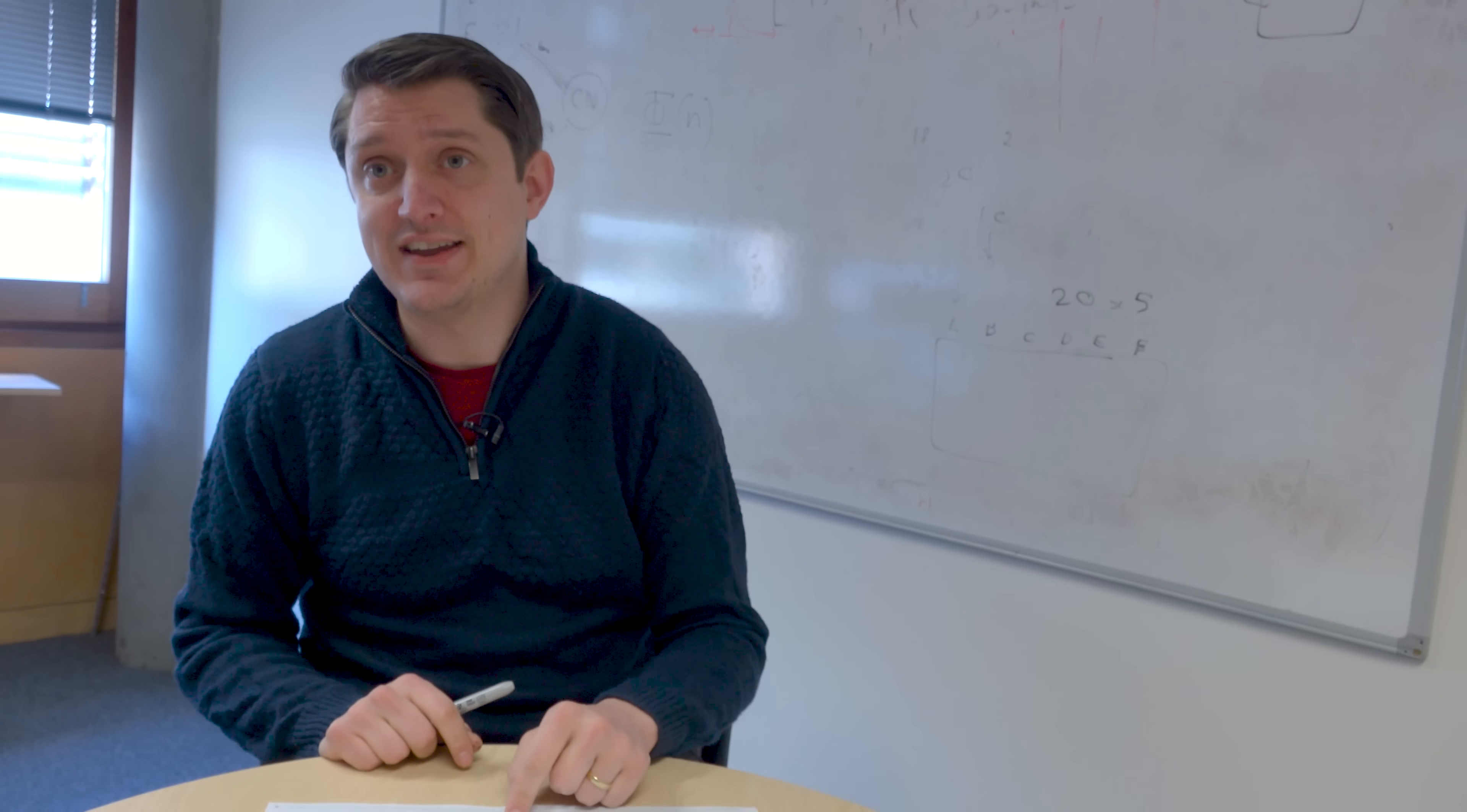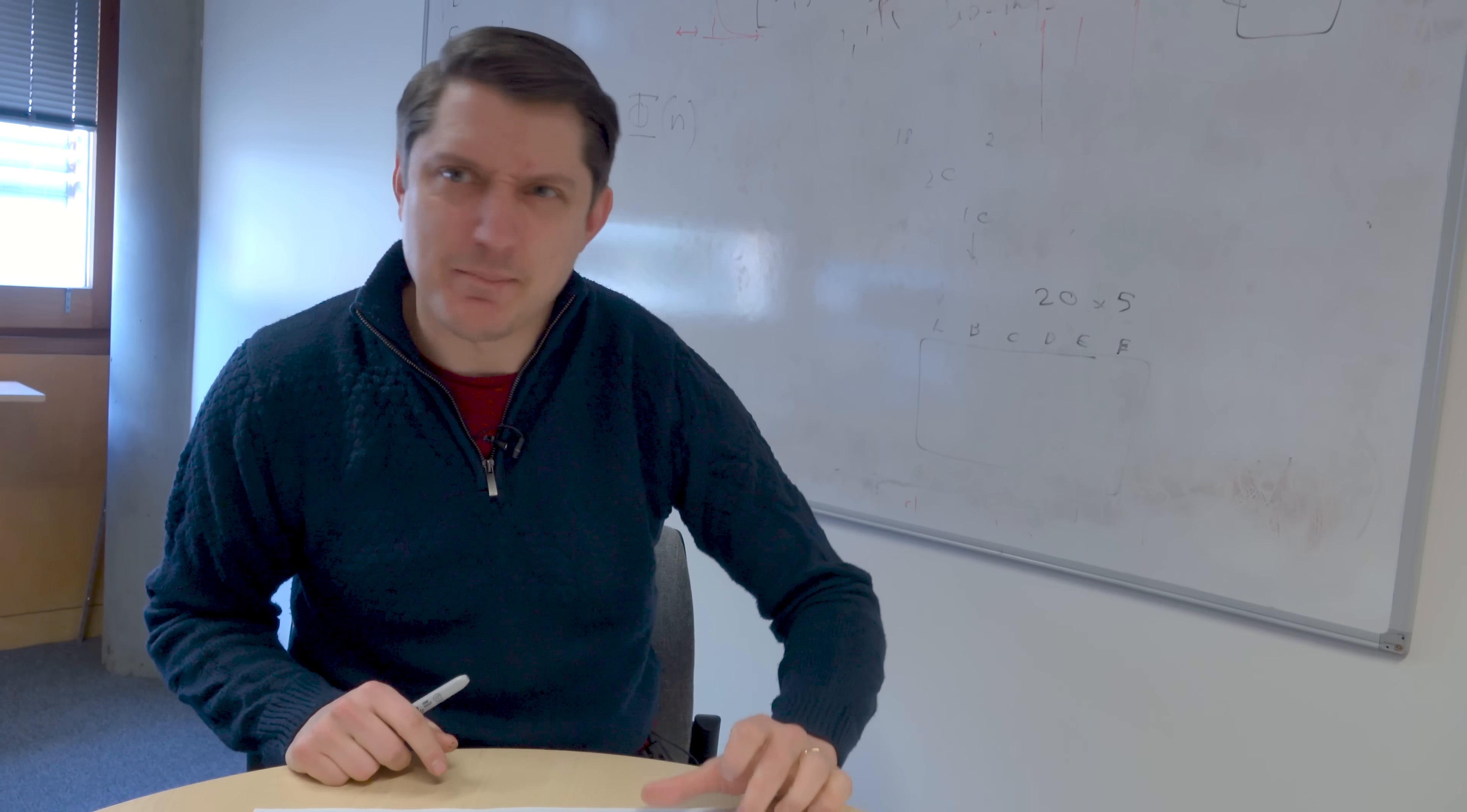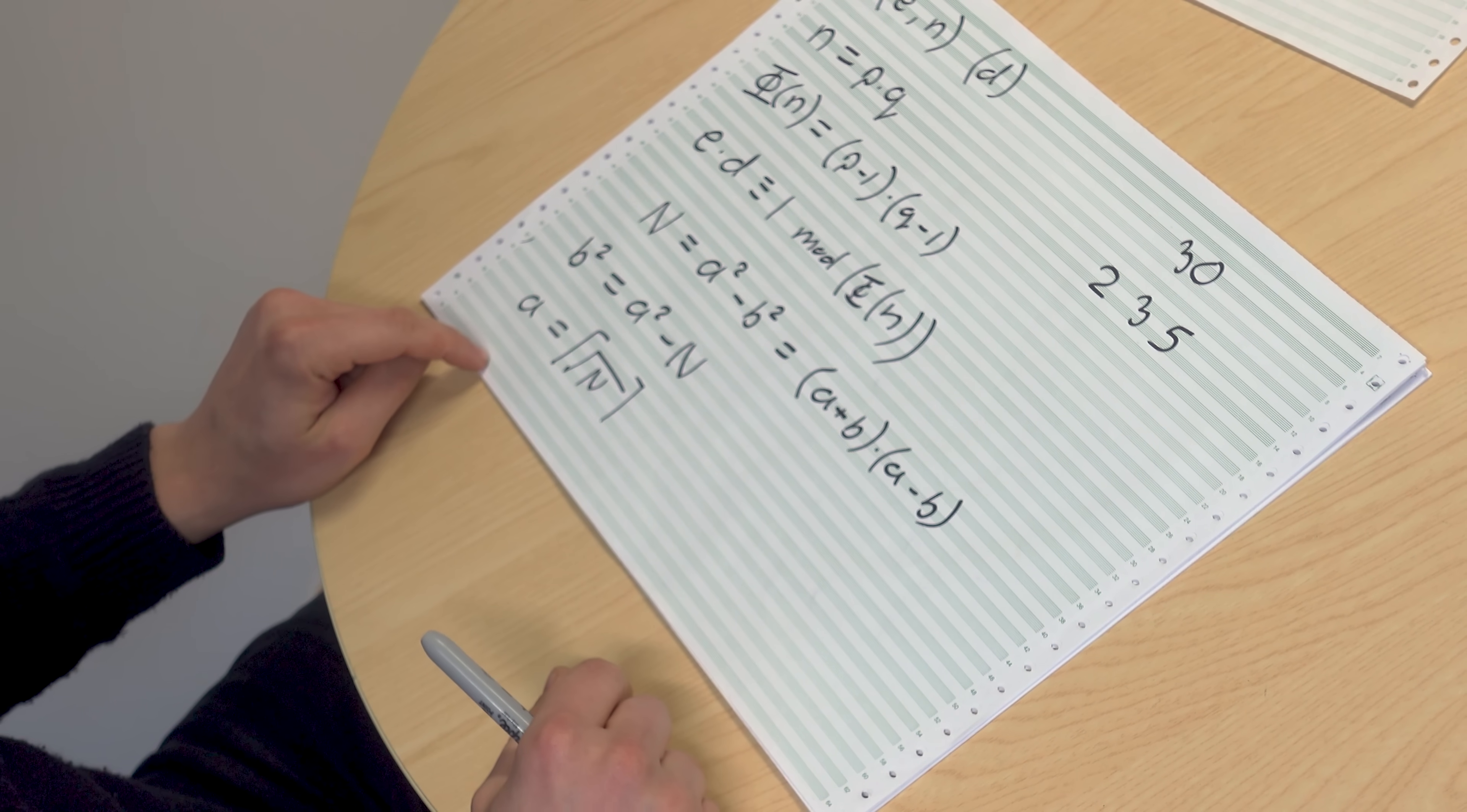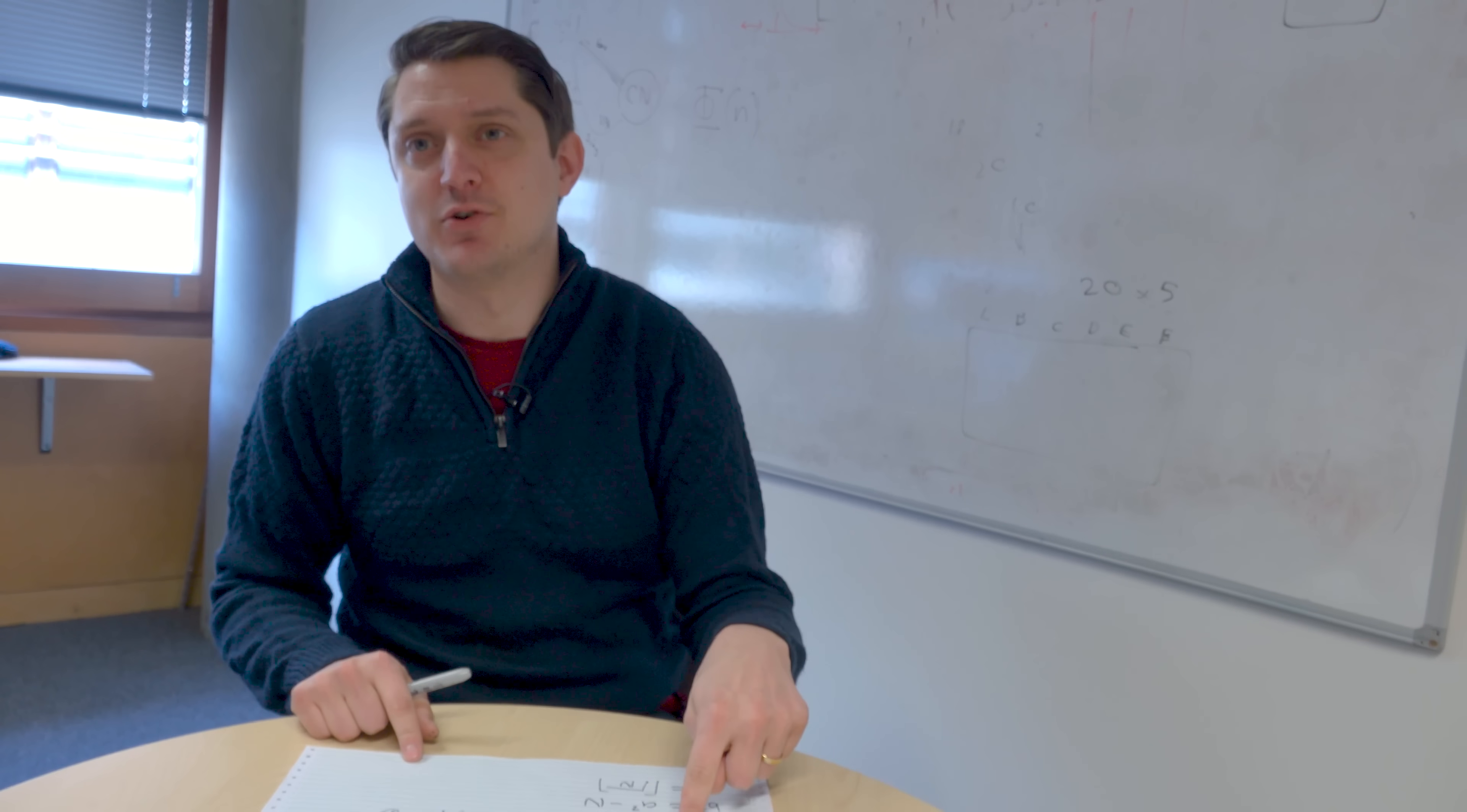So what we do is we add 1 to A, and we try it again. We square A, we subtract the original value, and we find if we've got a square number. Now, this is not trivial to do in terms of the amount of computation to calculate these large square roots and things, but it's not that bad. And the interesting thing about Fermat's factorization method is if P and Q are fairly close to each other, this will give you a solution for P and Q extremely quickly. You'll do a few iterations, you'll get an A where you square it, you minus N, and you've got a square number. Then you know what A and B are, and then you can do A plus B, A minus B to get P and Q, and you've broken RSA.